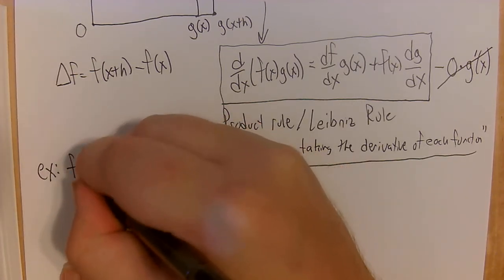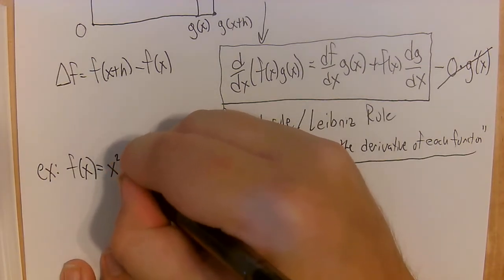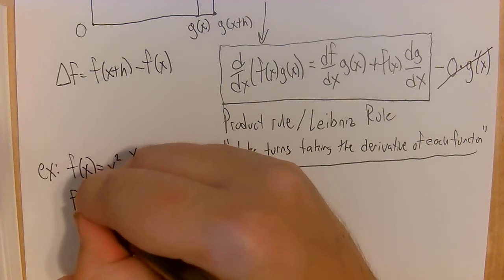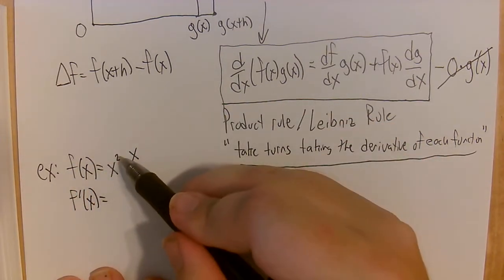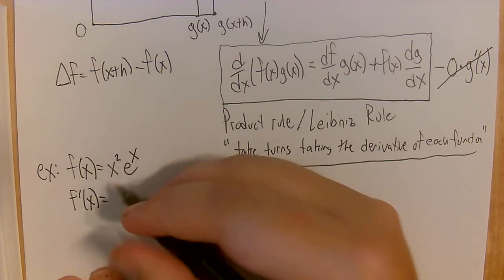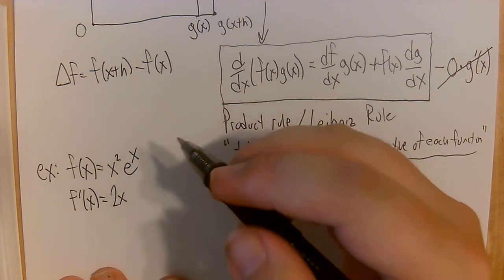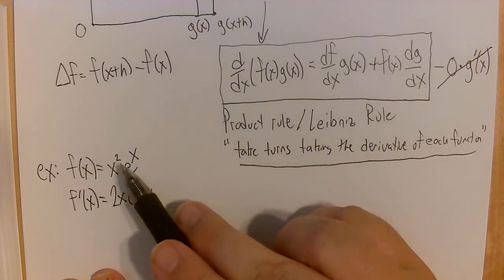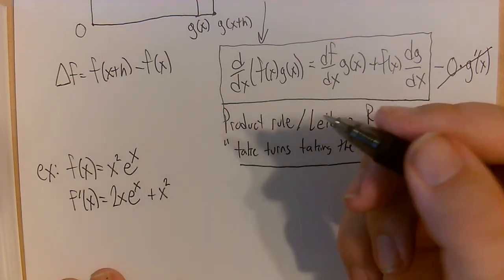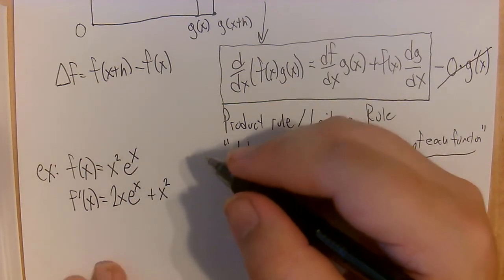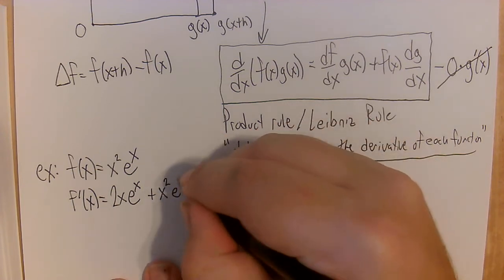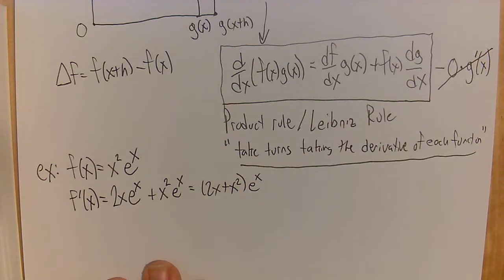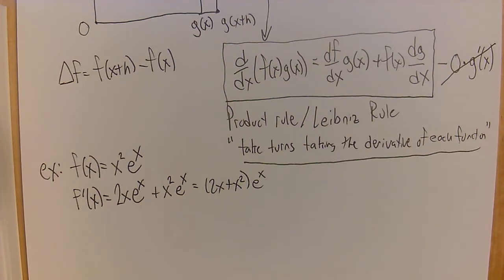Let's put it into practice. Say f of x equals x squared times e to the x — two different functions multiplied together. I'm going to take the derivative of the first piece, x squared, getting 2x, and leave e to the x alone. Then I leave x squared alone and take the derivative of e to the x. The derivative of e to the x is just e to the x. So our derivative is 2x times e to the x plus x squared times e to the x, which we can factor as e to the x times the quantity 2x plus x squared.